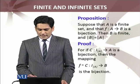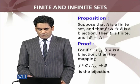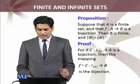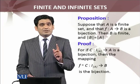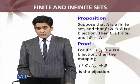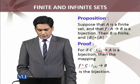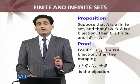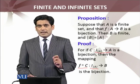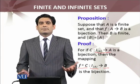Proof: finite set ki definition se, we have a bijection map from initial segment I_n — where n is the cardinality of A — to A. Since A is finite, there is a bijection from I_n to A, and by composition f∘c, this will be a bijection map from the initial segment I_n to B. So B is also a finite set with the same cardinality.